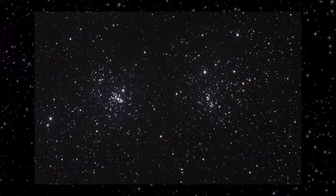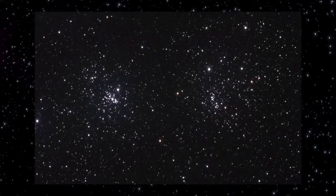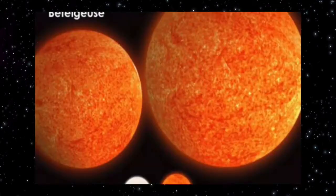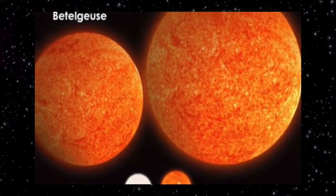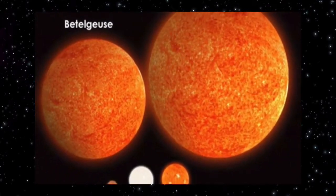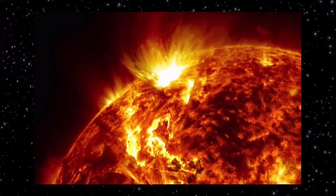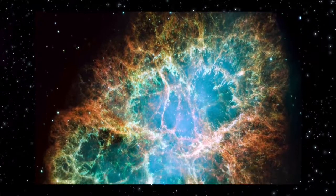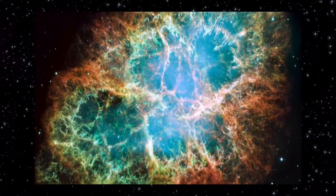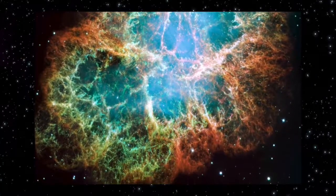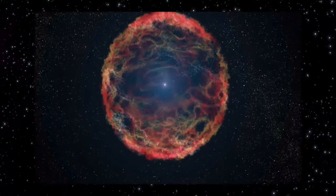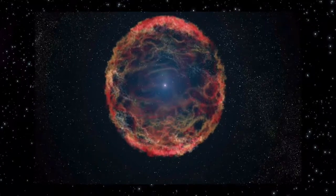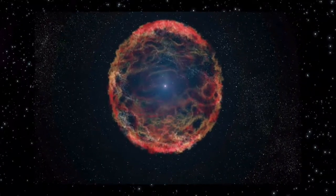When that energy eventually runs out, some stars die in a dramatic fashion. We call that a supernova. And when that occurs, the star explodes, releasing all kinds of elements and materials that are necessary for building planets, building moons, building other stars, and even building life.